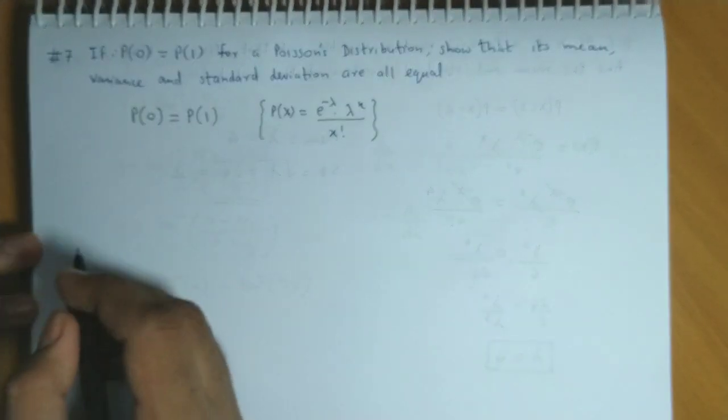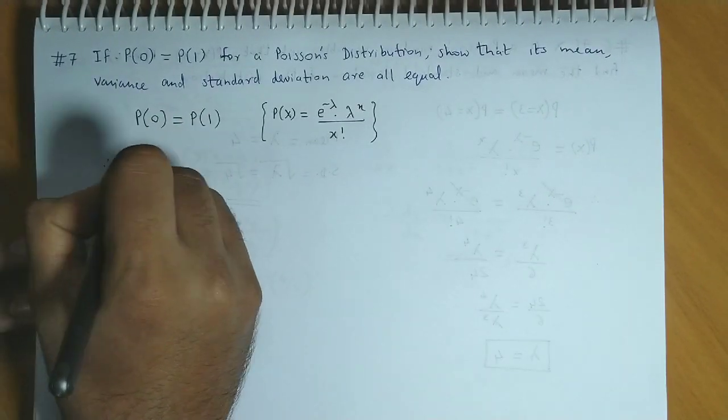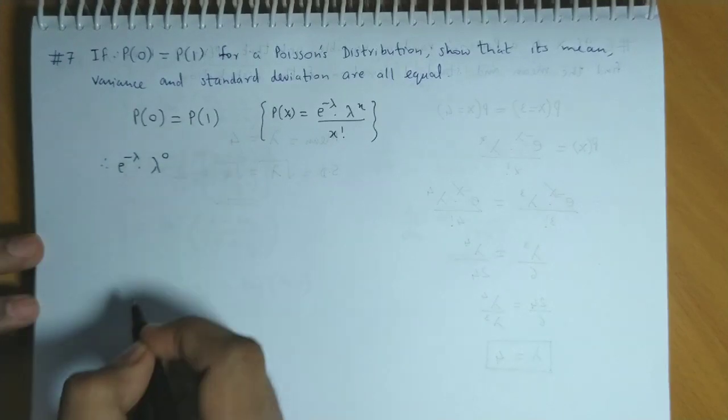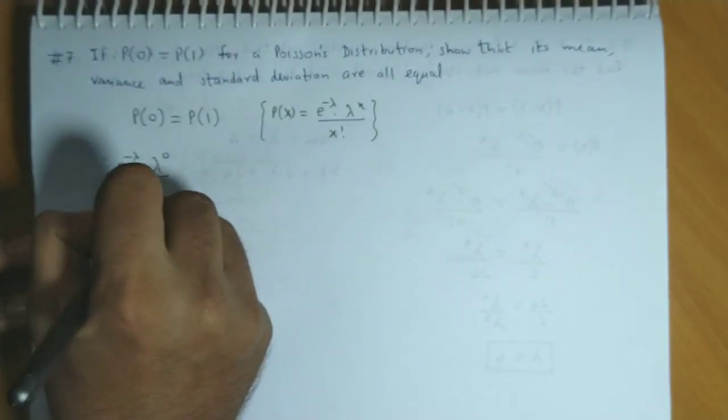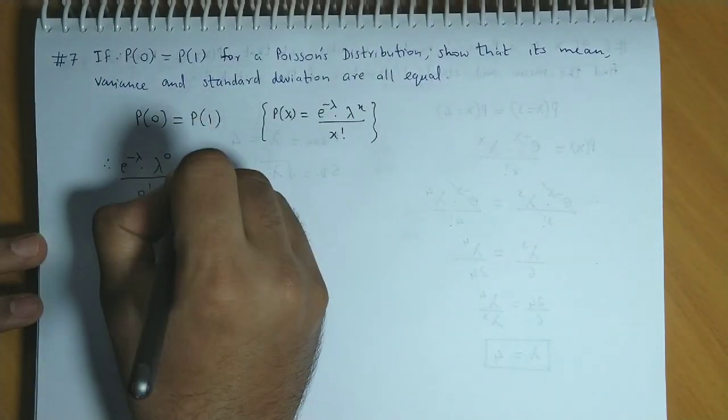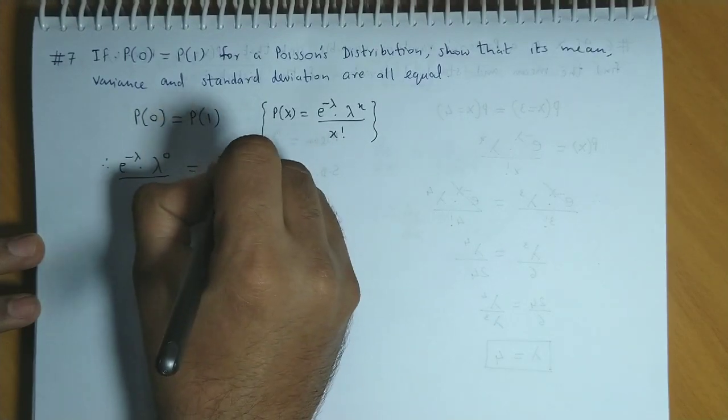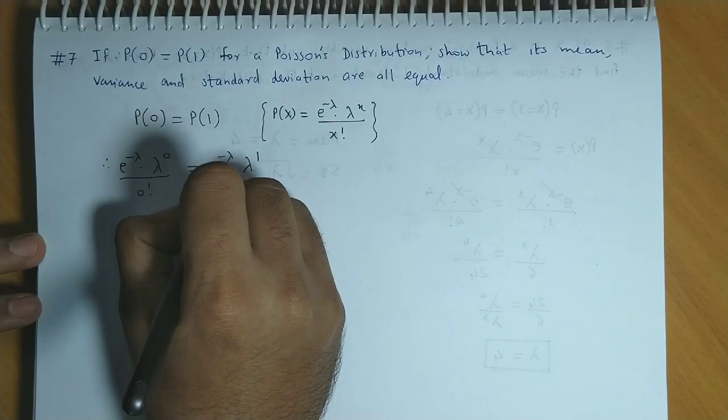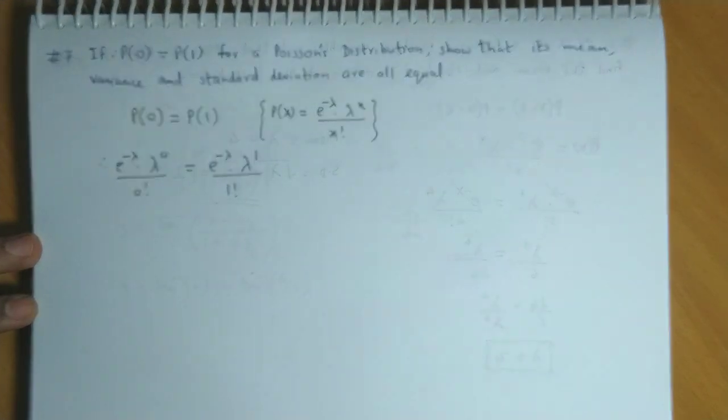We apply the formula on both sides. We have e raised to minus lambda, lambda raised to x, x value is 0 divided by 0 factorial. And on the right side, e raised to minus lambda, lambda raised to x that is 1 upon 1 factorial.